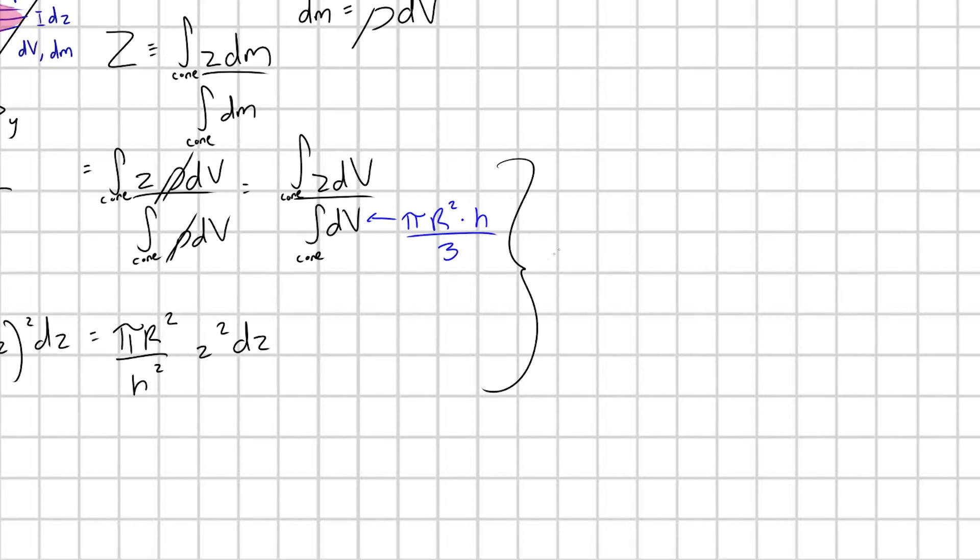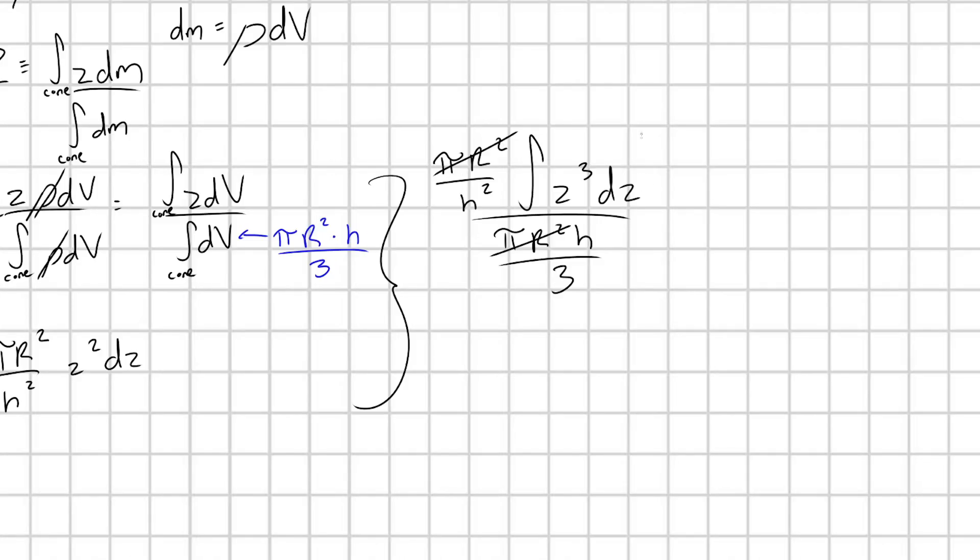Let's go ahead and plug this all in. I'm just going to leave constants outside of my integrals. So I'm going to have pi R squared over h squared integral—I'll think about the boundaries in a second—z cubed dz divided by pi R squared h over 3. Let's go ahead and cancel out these like terms here. And so this is going to be equal to 3 over h cubed integral of z cubed dz.